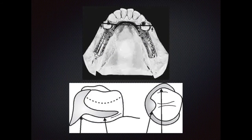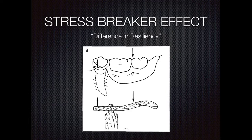The first picture on top clearly depicts a Kennedy's Class 1 situation. Whenever this situation arises there are certain characteristic features or considerations that one has to keep in mind. Historically, whenever a situation like this arose, what they used was a cast or circumferential clasp. A circumferential clasp will go and engage the abutment from the occlusal surface and go below the height of contour to engage the abutment. The major drawback was that it induced a lot of lateral forces onto the abutment, causing weakening and drifting of the abutment. So what we understood after a point was that there needs to be a stress breaker effect.